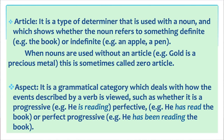Article: it is a type of determiner that is used with a noun and which shows whether the noun refers to something definite — for example, the book — or indefinite — for example, an apple, a pen. When nouns are used without an article — for example, gold is a precious metal — this is sometimes called zero article.